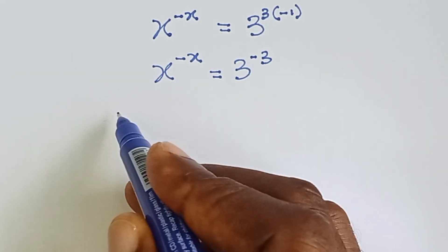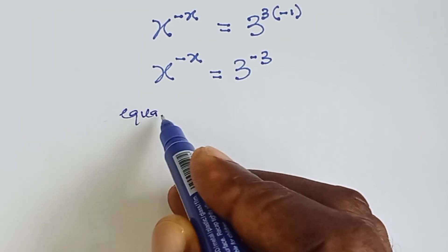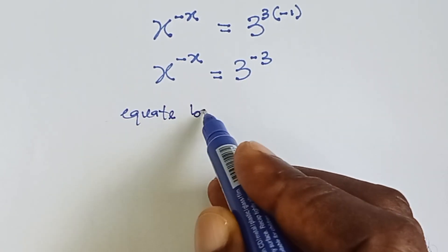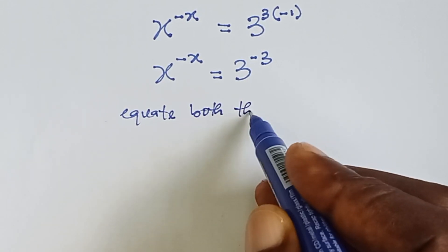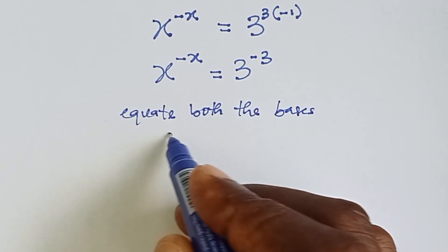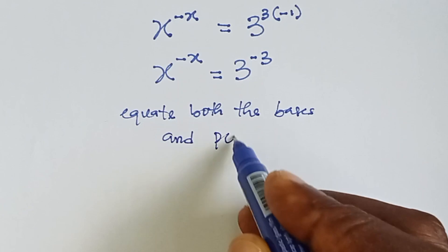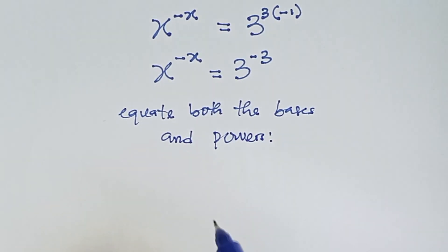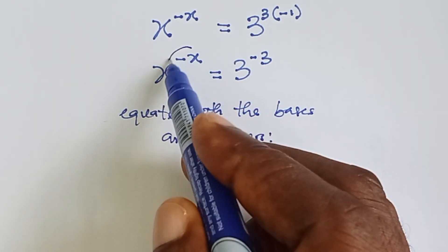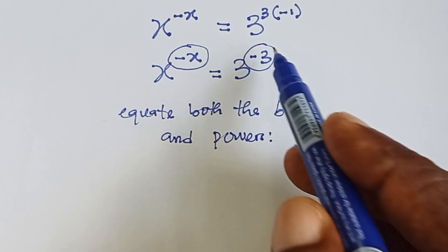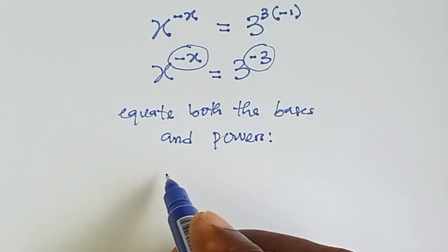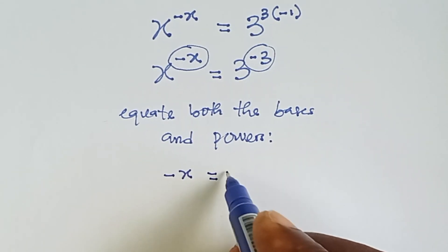Let's equate the bases and the powers. Equate both the bases and the powers. What this means is, let's equate the powers. Minus x equals minus 3.